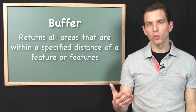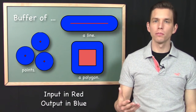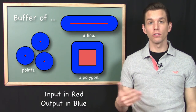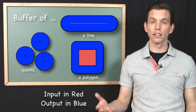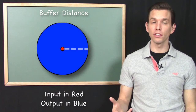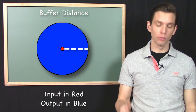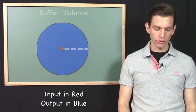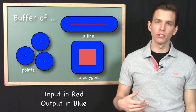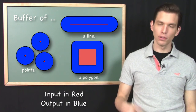Let's take a look at what acceptable inputs are for the buffer tool. We can see that we can input points, lines, and areas into the buffer tool and we can get this geometric result. What we do is we specify a buffer distance, and this is the radius for the buffers that we would like to create. Here is the input and the output when we execute a buffer operation on a point, line, and area.